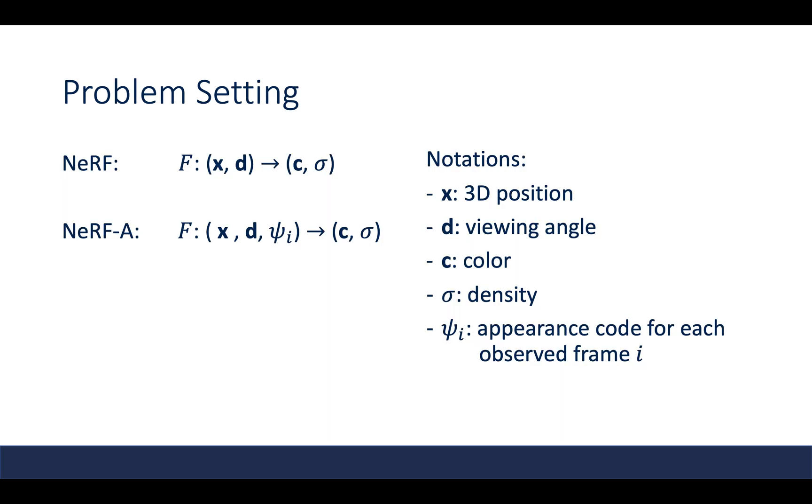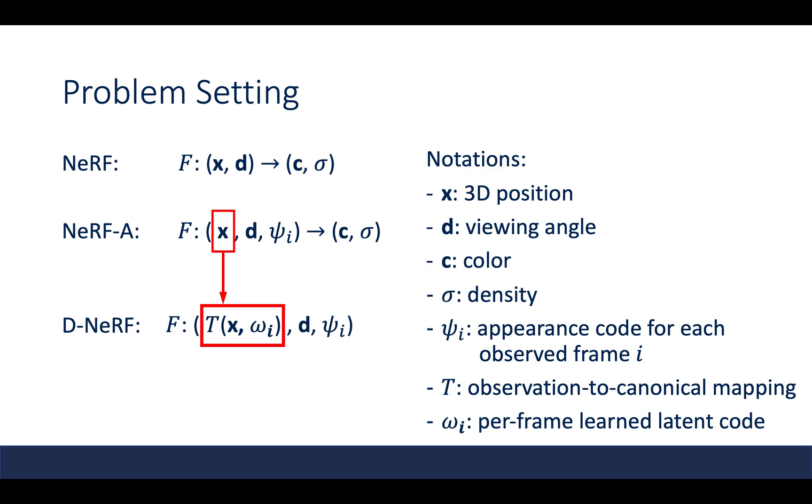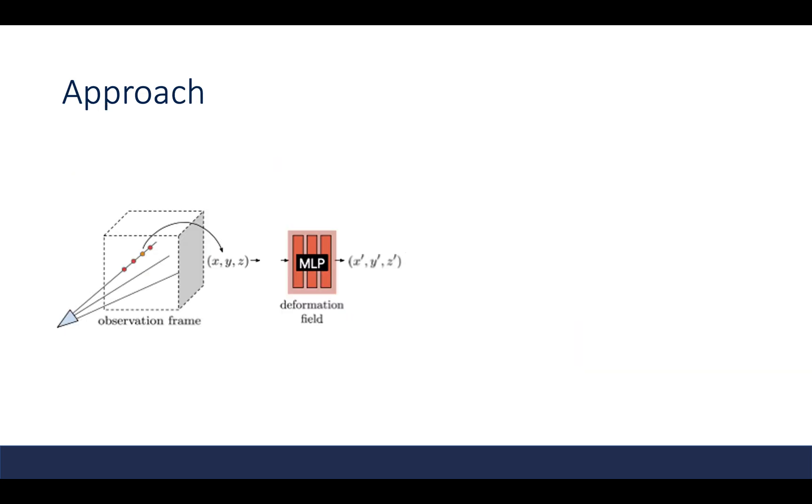We describe the problem setting first. We want the input coordinates of the NeRF-in-the-Wild method, because this paper builds upon the NeRF-in-the-Wild appearance model. And then we want the input x to be mapped to canonical frame coordinates, denoted by τ of x and ω_i, where τ is an observation to canonical mapping, while ω_i is the per-frame learned latent code.